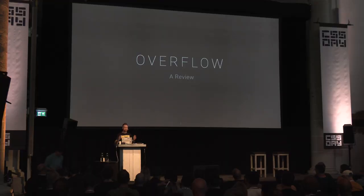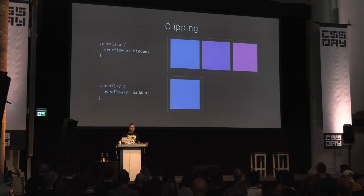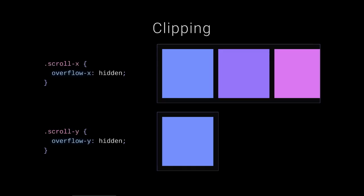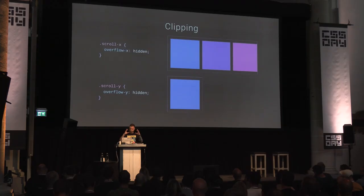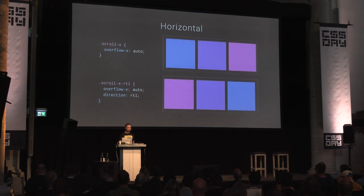First, a background on overflow, because that's what you need to do first — you have to create an overflow scenario in order to use scroll snap points. We'll start with clipping, the most basic: overflow hidden. We have items in a flex layout with no wrapping, each child set to not shrink, so they push out of the space. The scroll port has a firm height and width set, and in this case we just clip it.